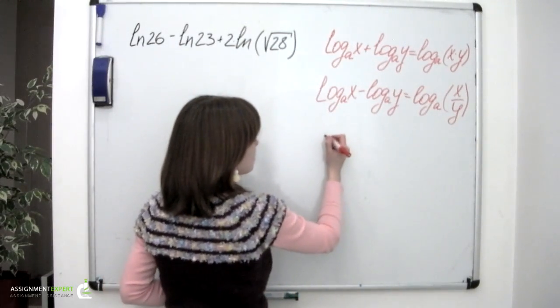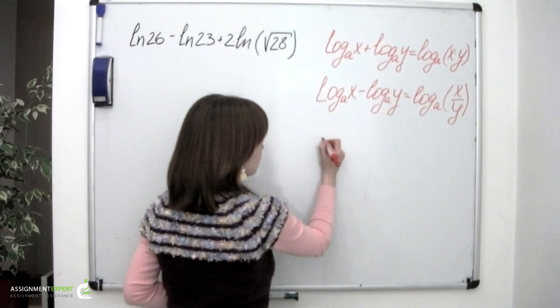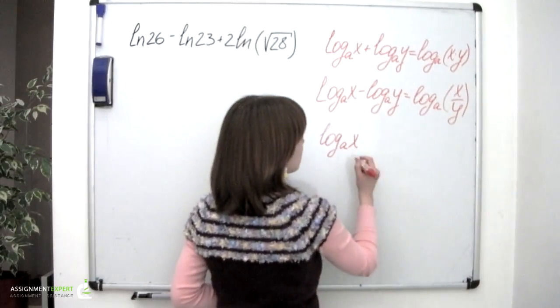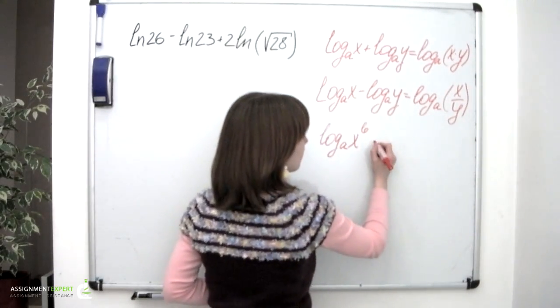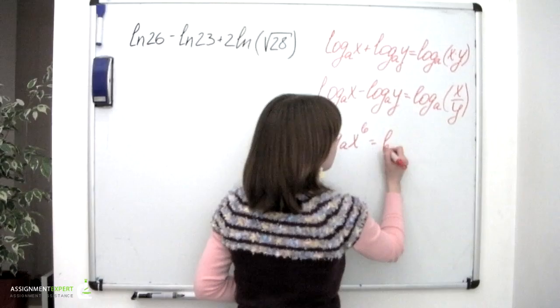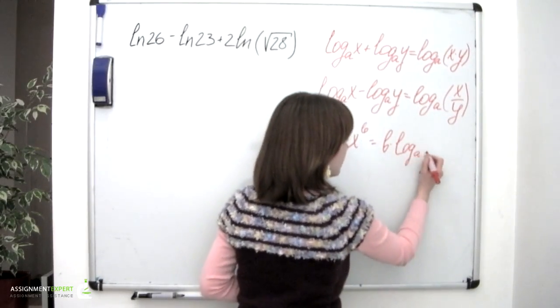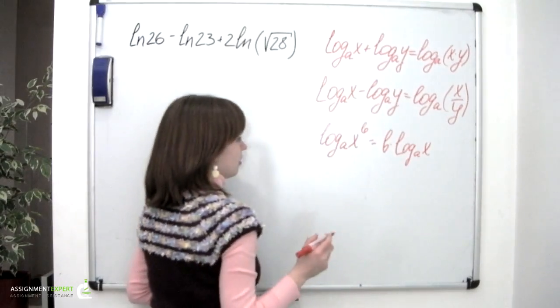Then there is the one stating that logarithm base a of x raised to the power of b is equal to b multiplied by logarithm base a of x. And vice versa.